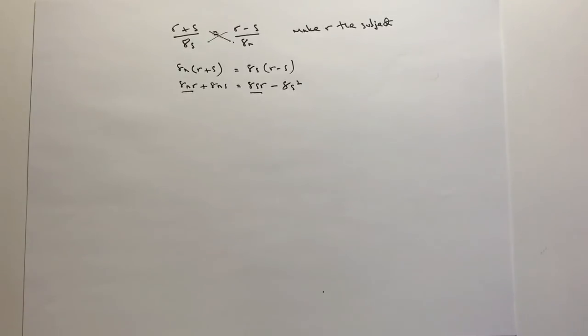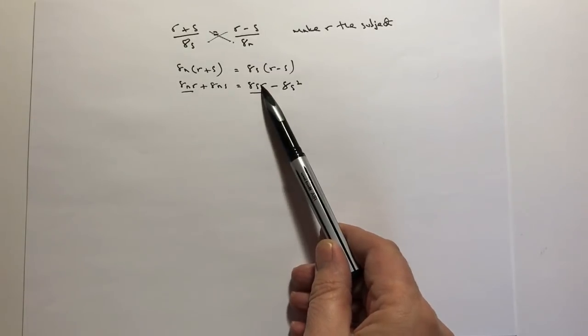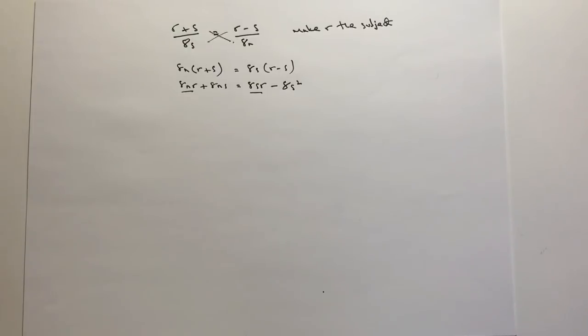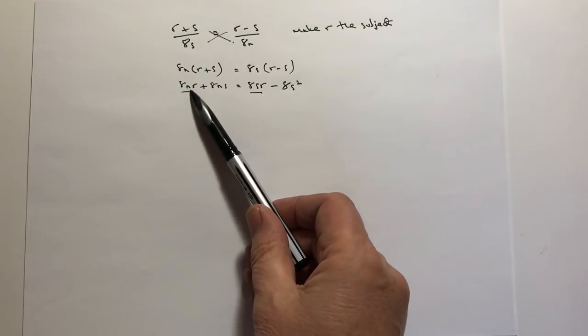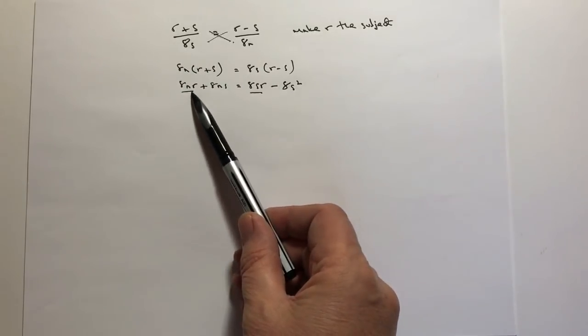OK, so the next thing I need to do is I need to make sure that I get the two terms that contain the value of r on one side of the equation, and then everything else on the other side. So what I'm going to do is I'm going to take this value over to here, and I'm going to take this value over to here.